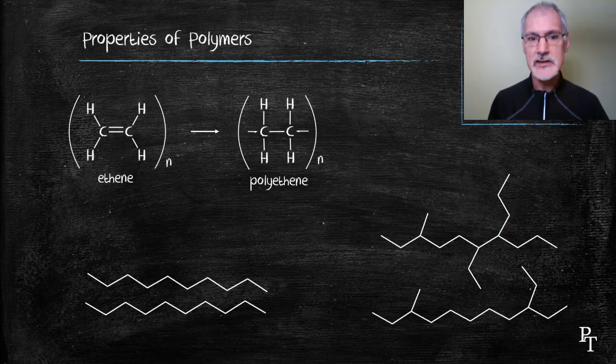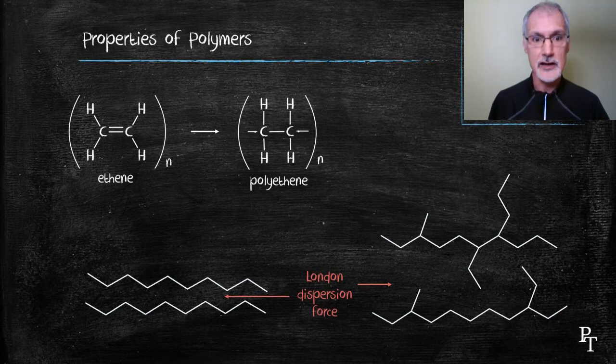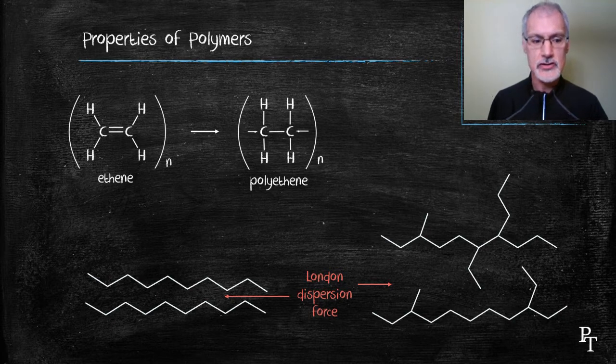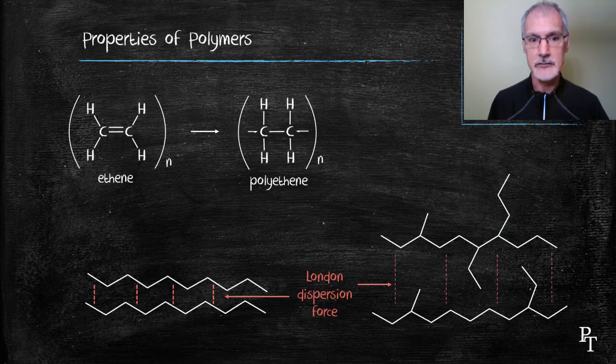First of all, they can have the London dispersion force that exists between them because the molecules themselves are not polar, but they are very large. The ones that can stack close together get very strong London dispersion forces, whereas the ones with branch chains tend to have weaker London dispersion forces. This leads to a difference in their properties.